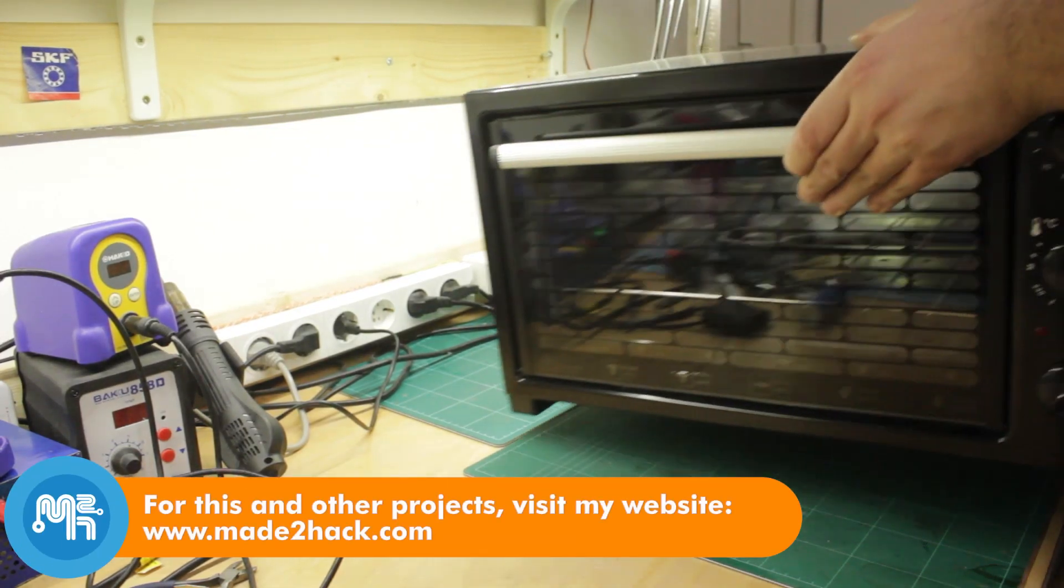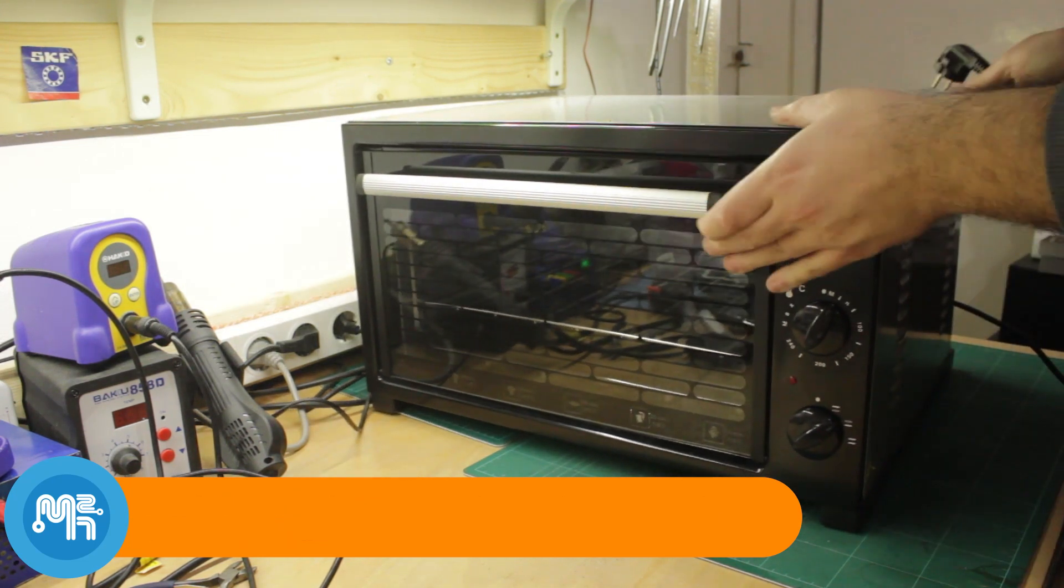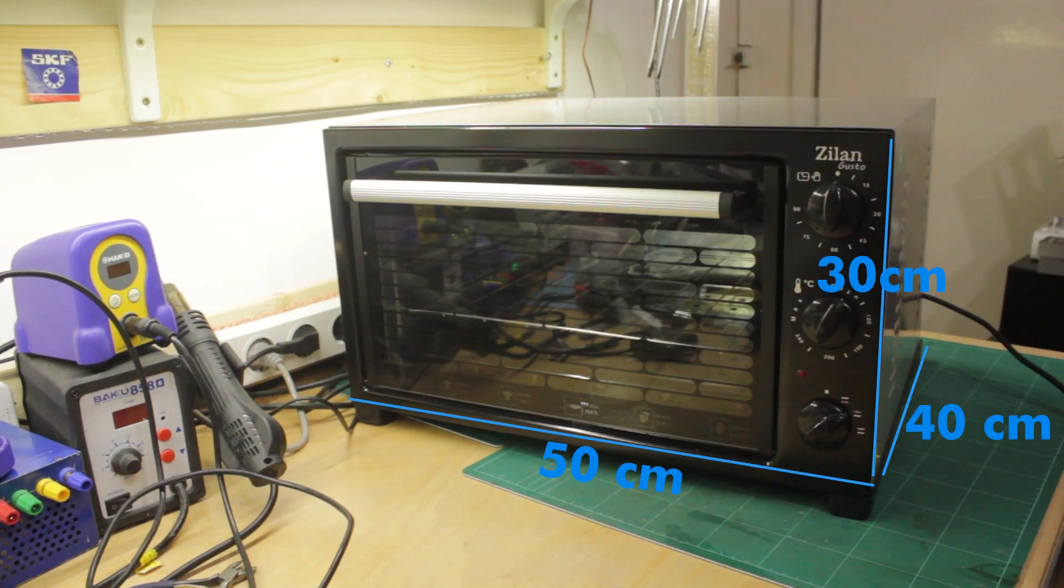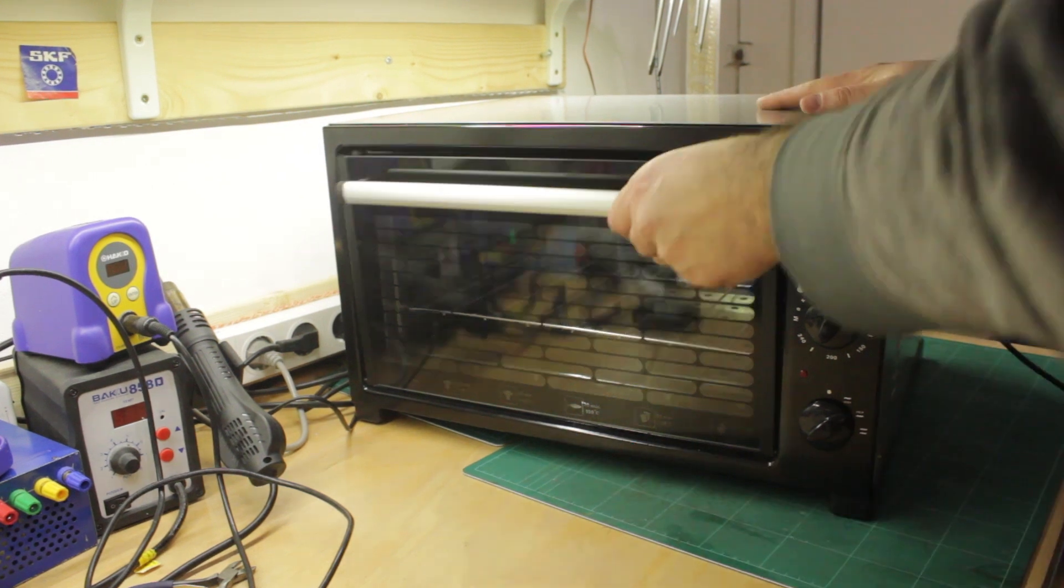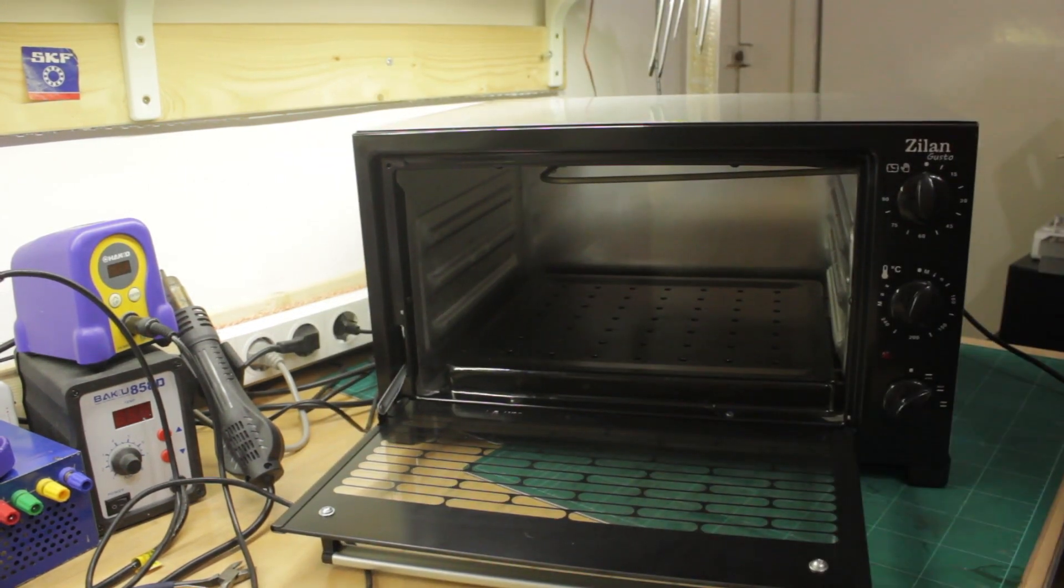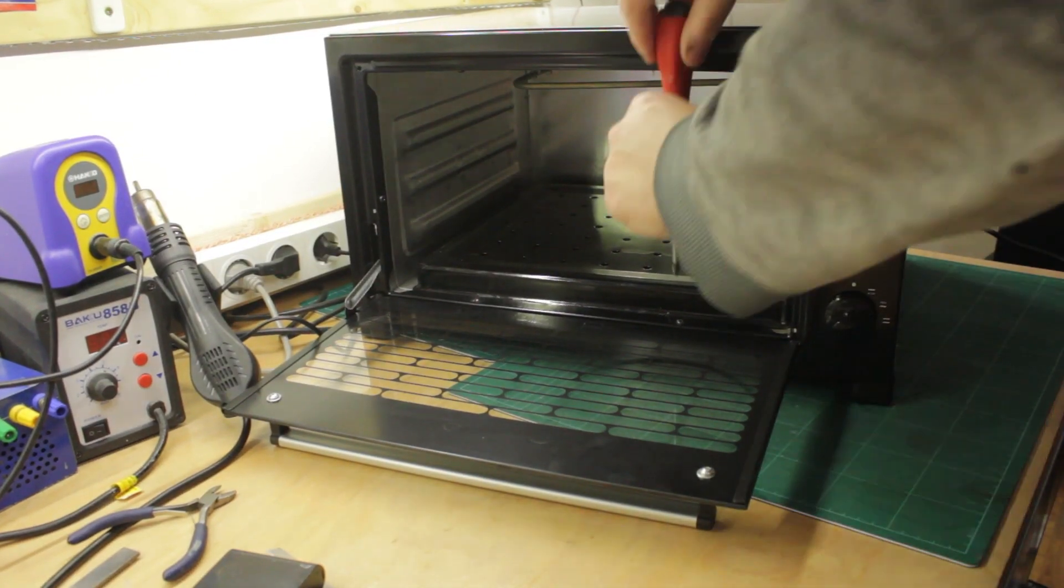This is a Zyland Gusto electric toaster oven with a 28L capacity and 1300W power. It measures 50cm x 30cm x 40cm deep. I'm starting to think it is a little big. Either way, I am converting it into an SMD reflow oven.